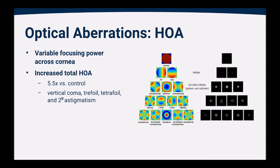What we find is that individuals with keratoconus have about five and a half times the amount of higher order aberrations in comparison to a normal cornea.